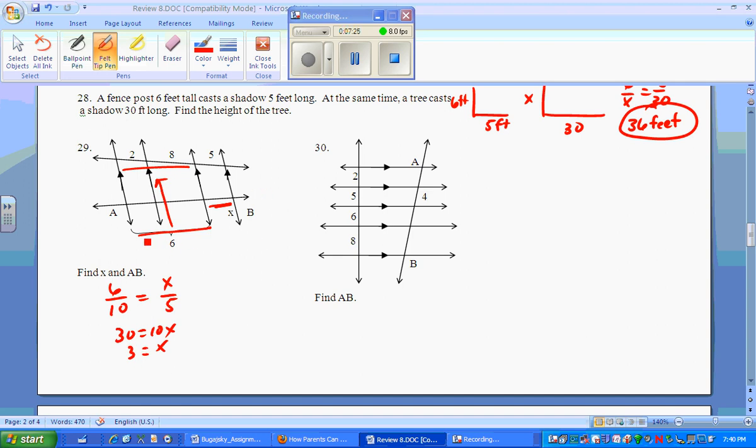You also want AB. AB is the whole thing. So then you could say, I knew this part was 6, this part is 3. 6 plus 3 equals 9. So AB ends up equaling 9 for the conclusion of that question.